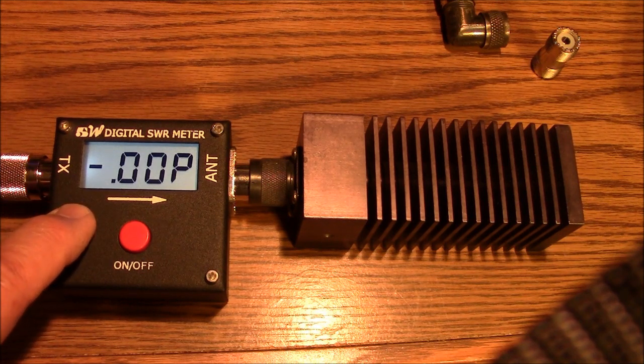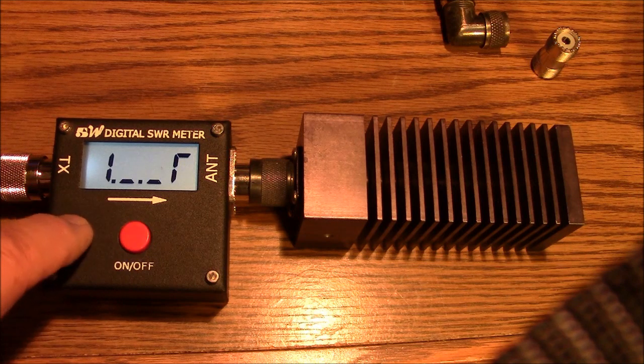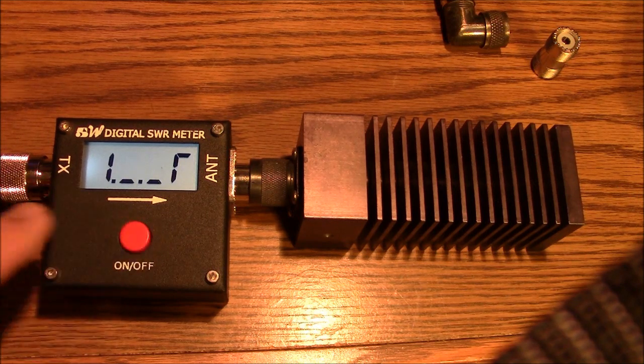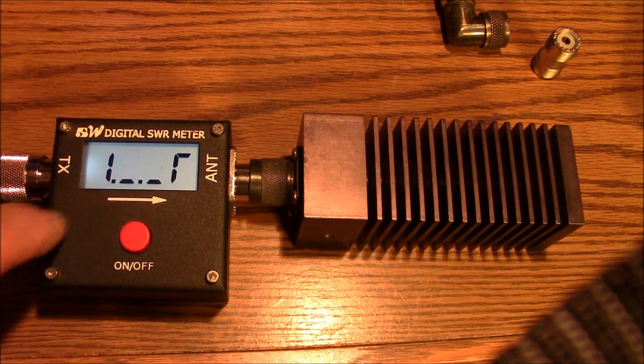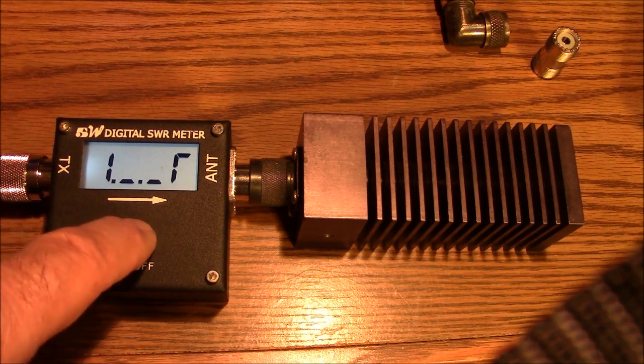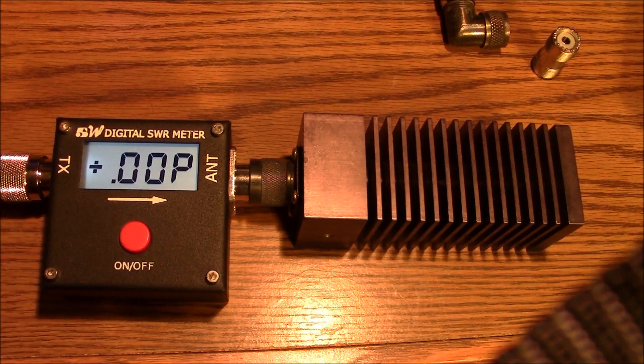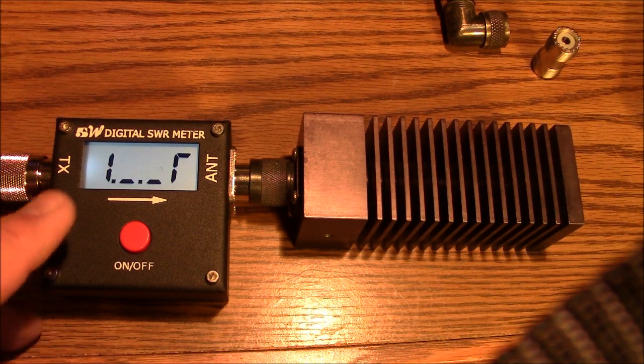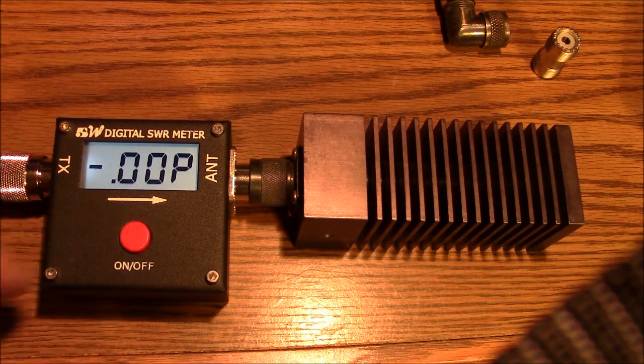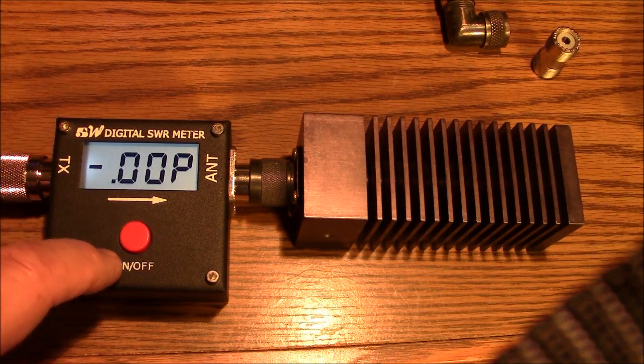I can hit it again and one more time and I can hold it on the SWR reading and I can look at that or by releasing it with another push, I can let it cycle through and I can read all readings in a serial fashion one after the other. To stop it I just hit the button and it will stop wherever it stops.